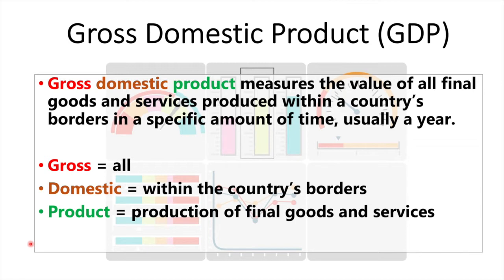Product means the production of final goods and services. This means we only count final products, not intermediate goods. This is done to avoid double counting. The final value of a car is included in GDP, but not also the value of the tires, glass, and metal used in production — otherwise this would provide an inflated sense of the size of the economy.